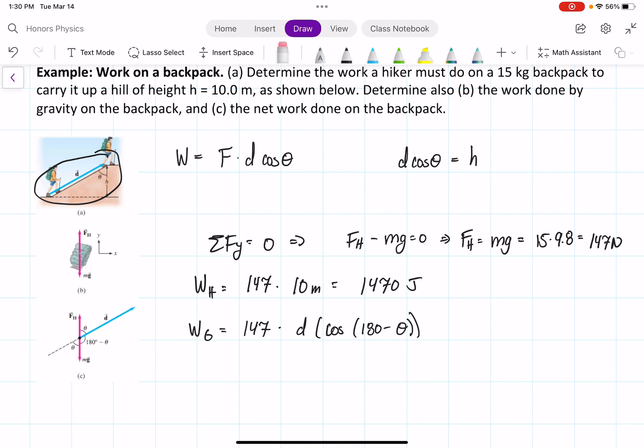times d times cosine of 180 minus theta. Cosine of 180 is going to be negative 1, and we have cosine of negative theta, which is going to give us that this is equal to 147 times negative d cos theta,